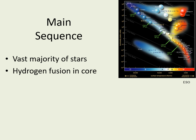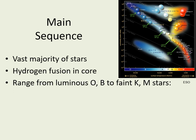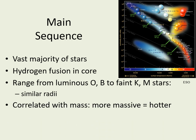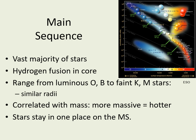The main sequence is special — there are a lot of trends here that we don't see with other stars. The hotter stars are also the more luminous stars, and most main sequence stars have similar radii — the ones near the top are bigger, but not by a lot. Another important trend is mass: the higher luminosity stars are also the higher mass stars. O and B main sequence stars are much more massive than K and M main sequence stars. Stars don't move around much on the main sequence — except at the very beginning and end of a star's life, its mass hardly changes at all, so while it's on the main sequence, it stays in one place.